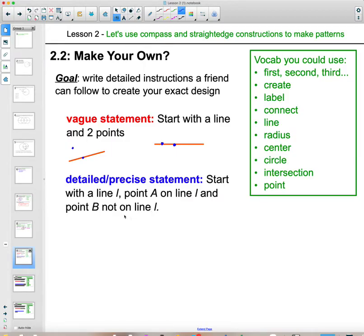This detailed instruction says, start with a line L, point A on line L, and point B not on line L. What we're doing here is I actually skipped over to the lesson summary. I'm grabbing these statements from page 16. The vague statement is in the left-hand column, and the detailed statement is in the right-hand column.